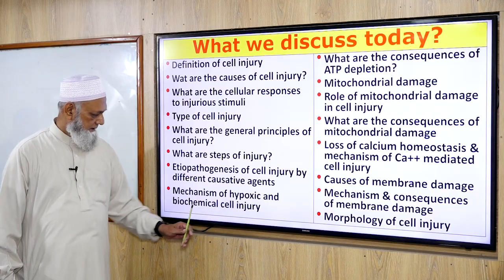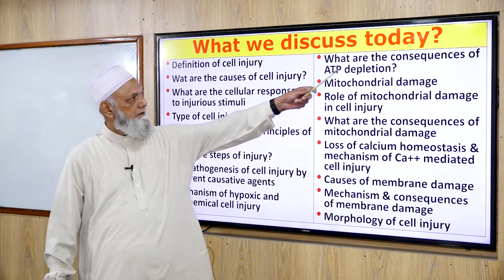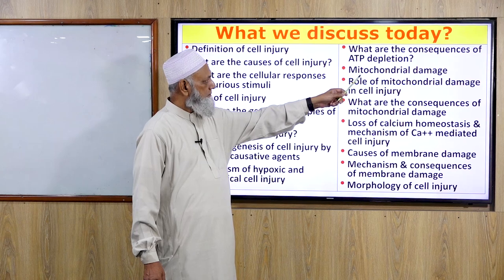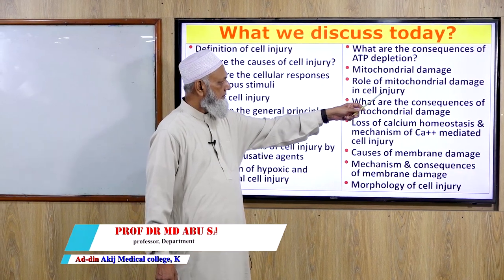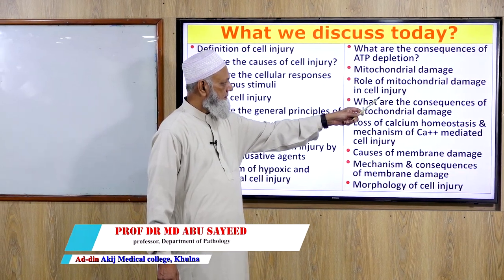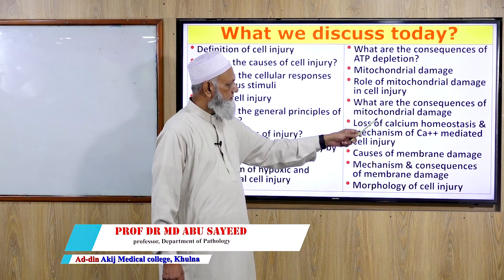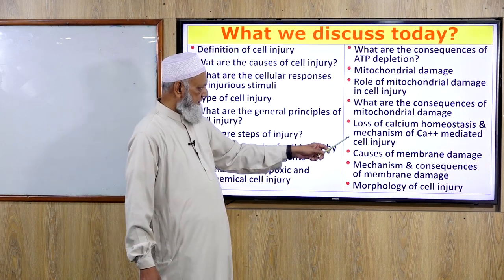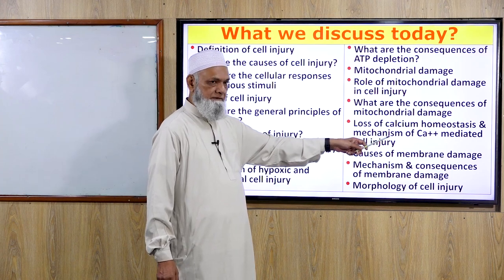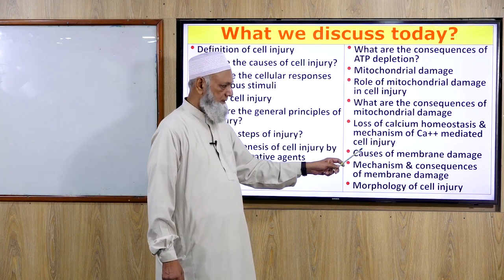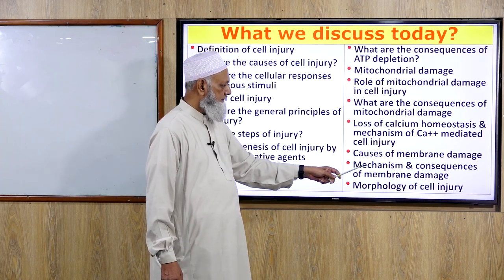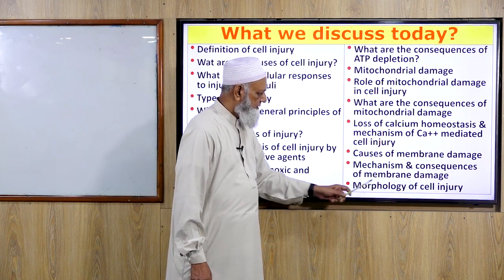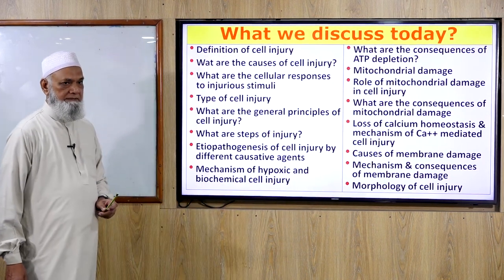We will also cover mechanism of hypoxic and biochemical cell injury, consequences of ATP depletion, mitochondrial damage and its role in cell injury, loss of calcium homeostasis and mechanism of calcium-mediated cell injury, causes and consequences of membrane damage, and morphological aspects of cell injury.